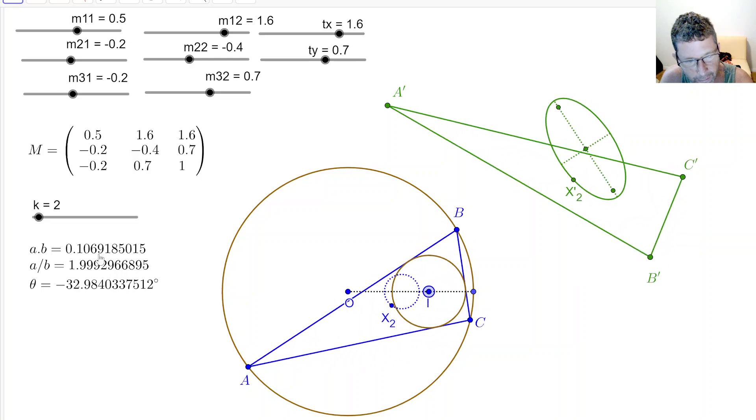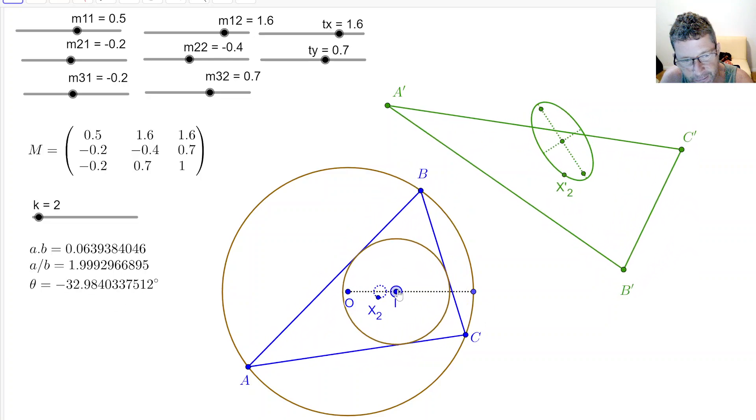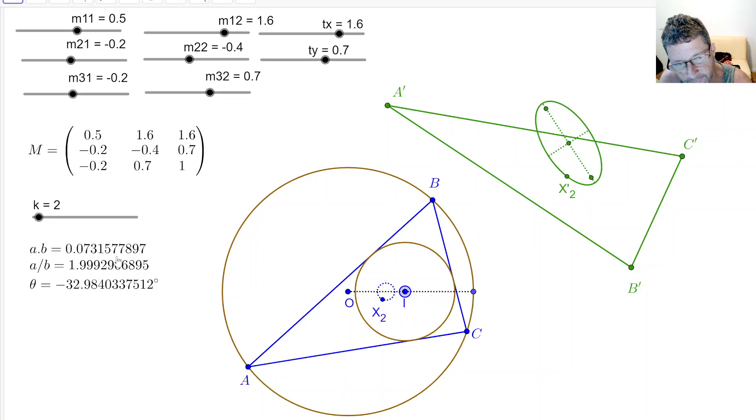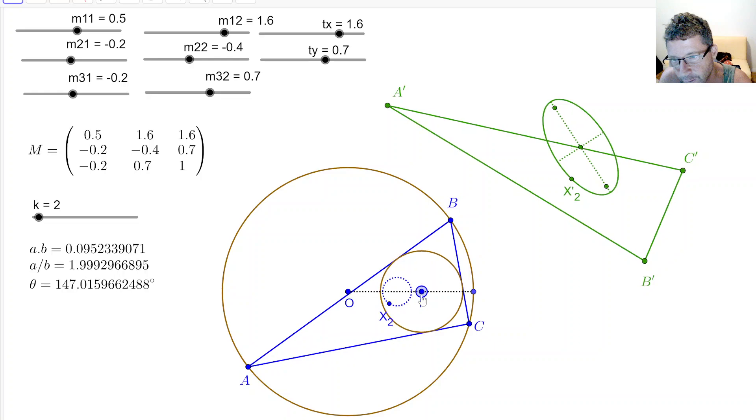I'm showing here on the left, the product of the axis of this locus, the ratio of the axis, and the orientation of this axis. So as I animate this, you can see here that the ratio of the axis is maintained under a full projectivity. The ratio of the axis of x2 is maintained, as is the orientation of that locus.